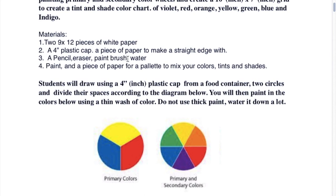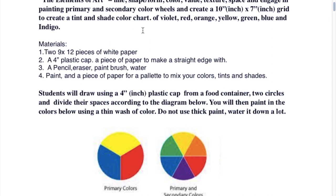You are going to need paintbrush and water. We are also going to be making a 10 inch by 7 inch grid to create a tint and shade color chart of violet, red, orange, yellow, green, blue, and indigo.